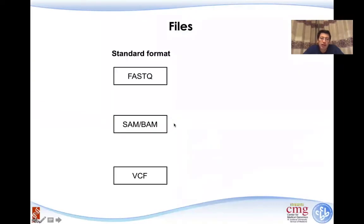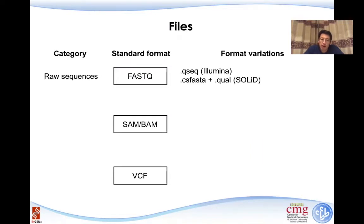There are three standard data formats for next-generation sequencing: FASTQ, SAM/BAM, or VCF files. The FASTQ files are the raw sequencing information, all those ACGTs.